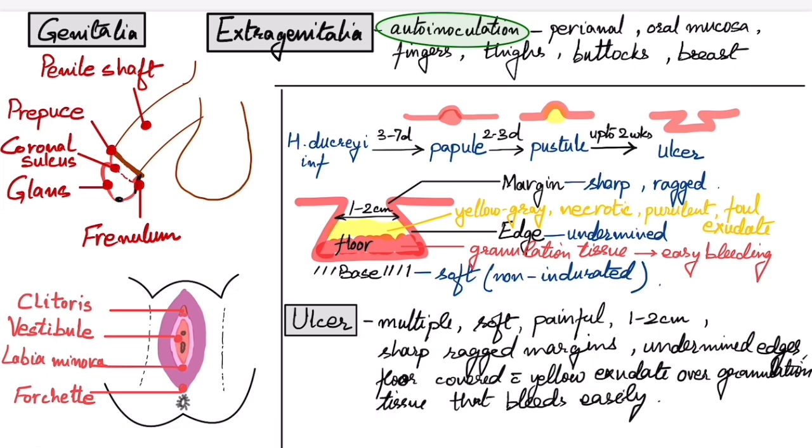A very important feature is the kissing ulcers in chancroid. When the skin gets opposed, an ulcer on one side has a very similar mirror image ulcer on the other side. For example, if the ulcer is on the prepuce, there can be another ulcer of exactly mirror image on the thigh. These are the kissing ulcers.